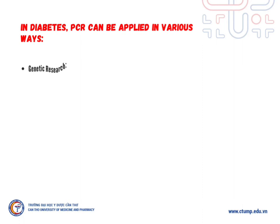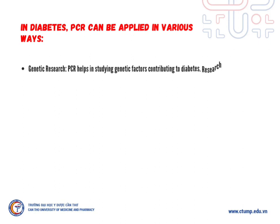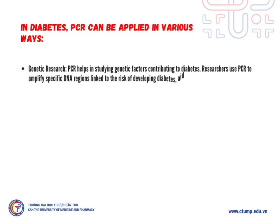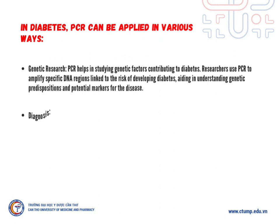In diabetes, PCR can be applied in various ways. Genetic research: PCR helps in studying genetic factors contributing to diabetes. Researchers use PCR to amplify specific gene regions linked to the risk of developing diabetes, aiding in understanding genetic predispositions and potential markers for the disease.